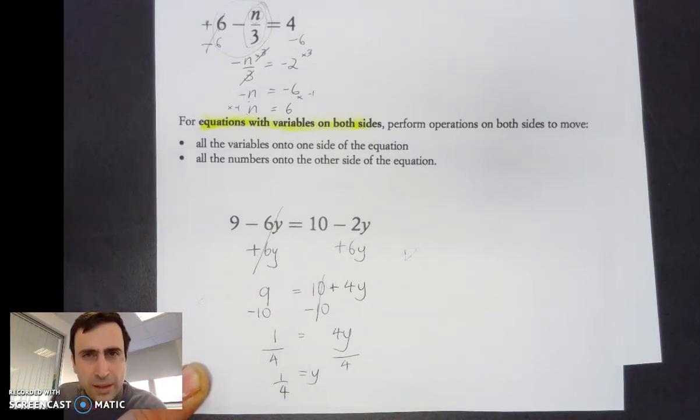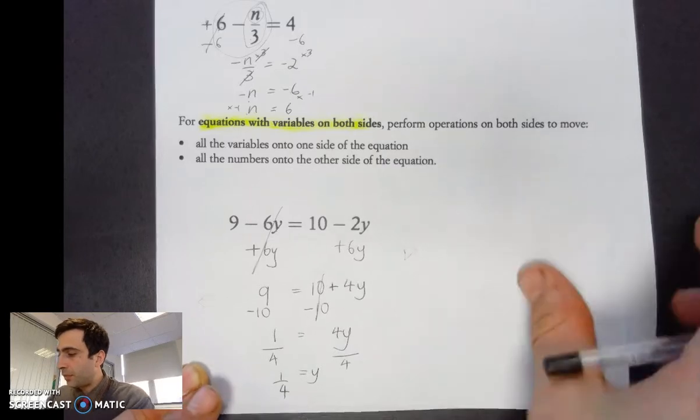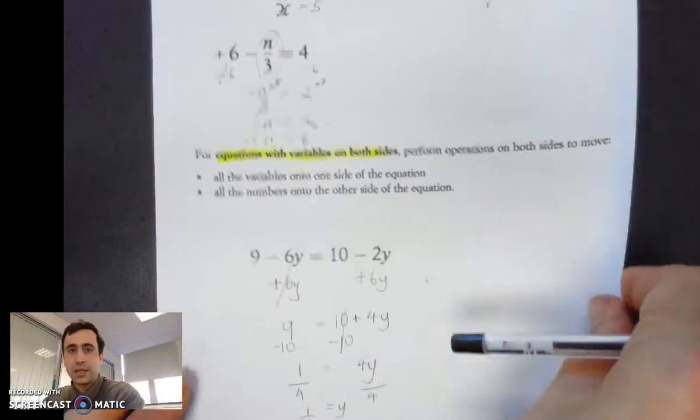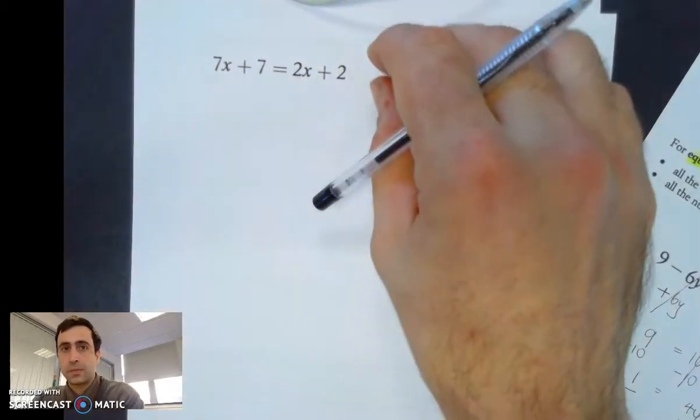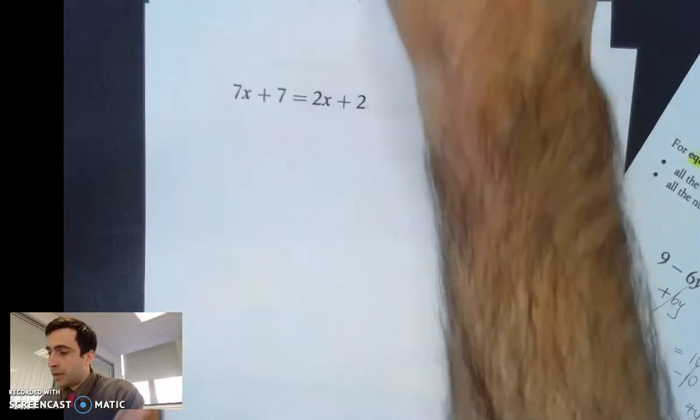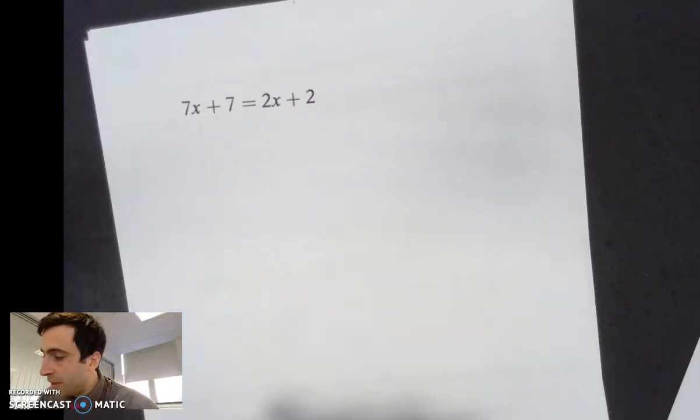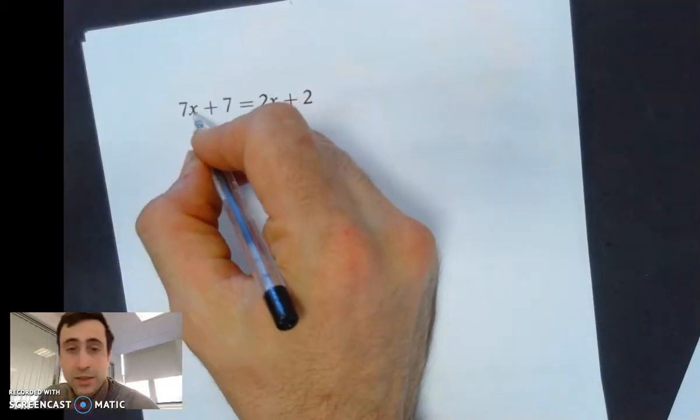It looks a bit ugly, but anyway, let's have a go at this again. Here's another one. You have 7x plus 7 equals 2x plus 2.